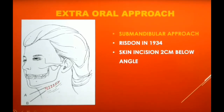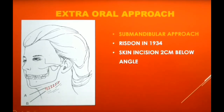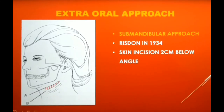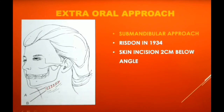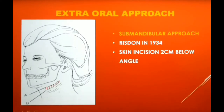Extra-oral approaches are performed always under general anesthesia. The first approach is the submandibular or Risdon approach. This particular incision is used for gaining access to fractures in the ascending ramus, the angle, and body of the mandible as far forward as the premolar region. The skin incision is 4 to 5 cm in length. The marginal mandibular nerve runs 1.5 cm below the angle of the mandible; therefore, the incision is placed at least 2 cm below the angle. Try to position the incision in an existing skin crease so that it hides the scar.